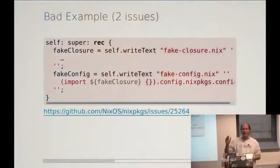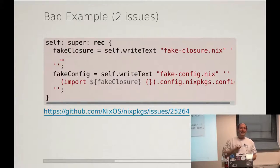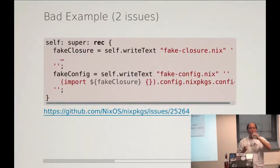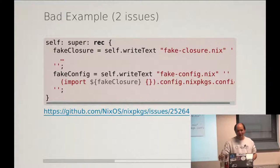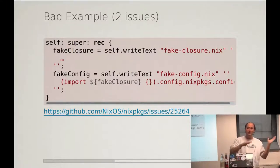I will ask you to raise your hand as soon as you find the issues in these examples. If you find one issue, raise your hand this way. If you find two, raise your hand that way. If you are watching remotely, you have the N key to see the answers. The first issue is writeText — writeText is a function. It generates a derivation, but it's a function, so it comes from super, not self.